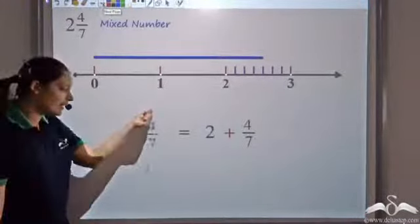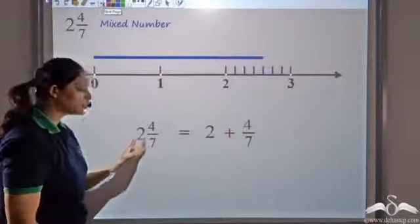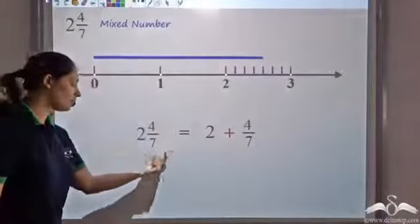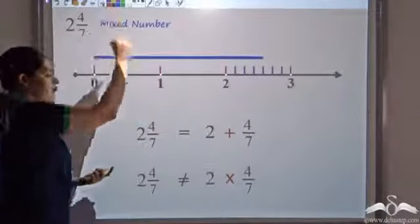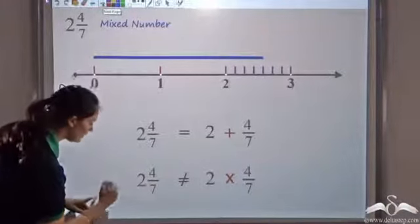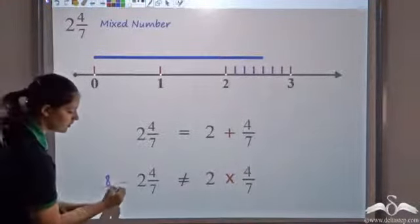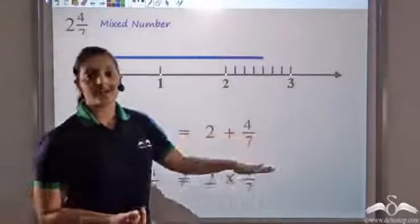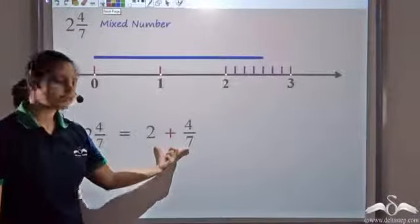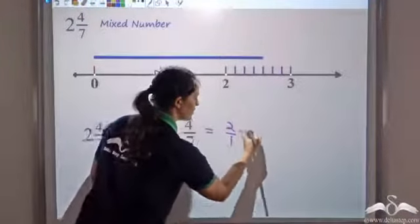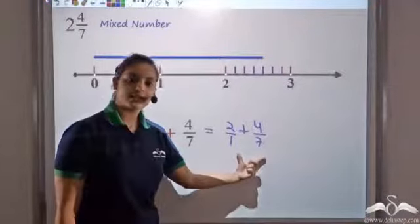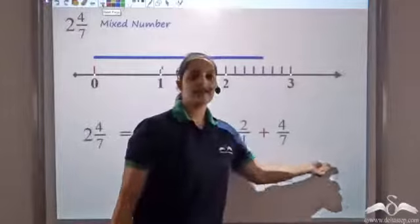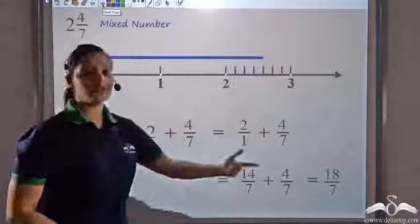An easier way: remember that two and four by seven means two plus four by seven — two units plus four by seven. You can write two as two by one, plus four by seven. Now you have two rational numbers. Taking LCM and making the denominators the same, you add these two numbers, which gives eighteen by seven — the improper fraction. So that's how you can convert a mixed number to an improper fraction. Important note: two and four by seven is two plus four by seven, NOT two times four by seven — that would give eight by seven, which is wrong.